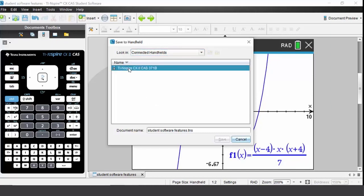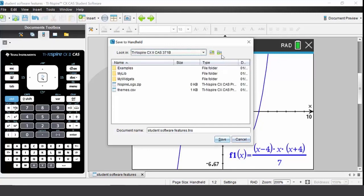Open your connected handheld. Once again you could create a new folder, put in the name of the file that you wish to call it and press save. It will then be saved directly to your handheld.